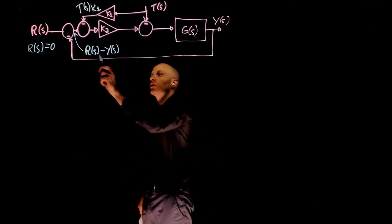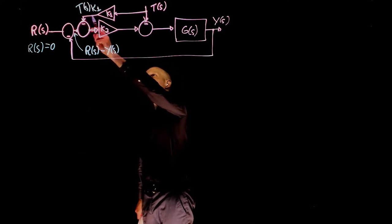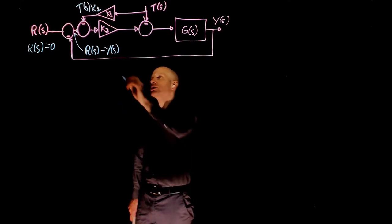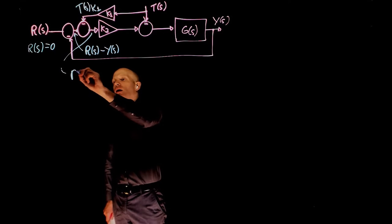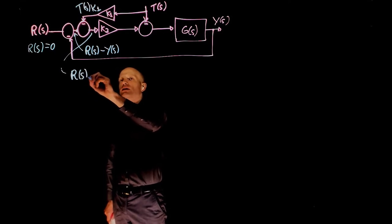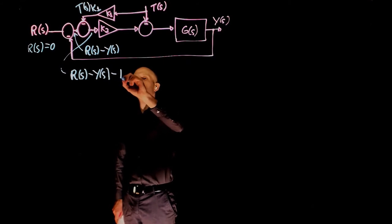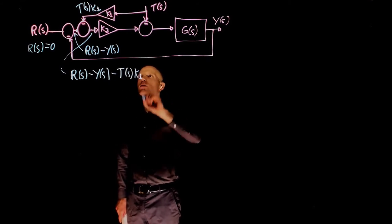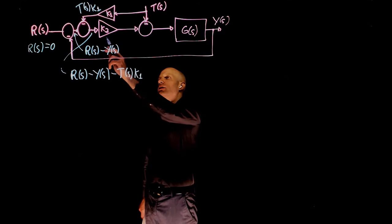Before the sum we have this signal and we are injecting T times K1, subtracting that and that gives the signal right here. So the signal there is R minus Y minus T times K1. This is the signal right before this gain.